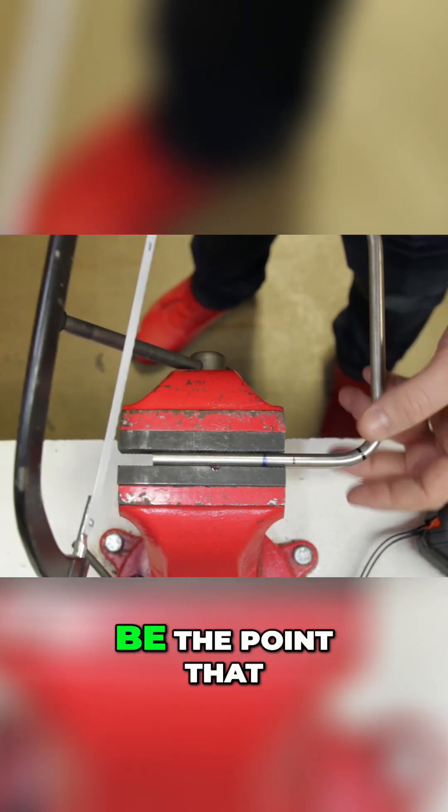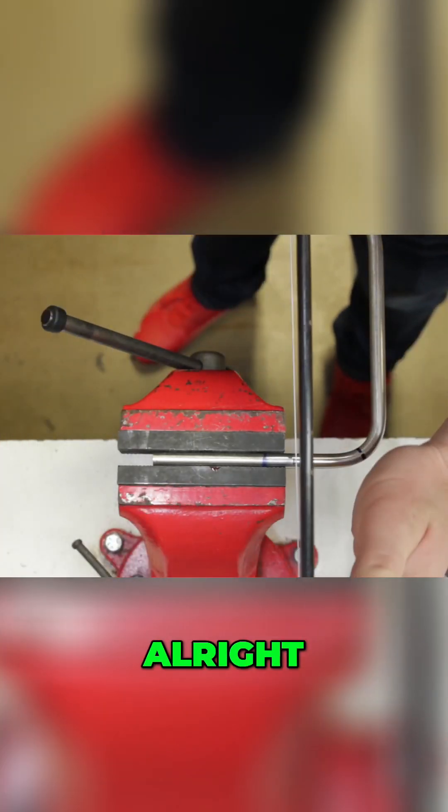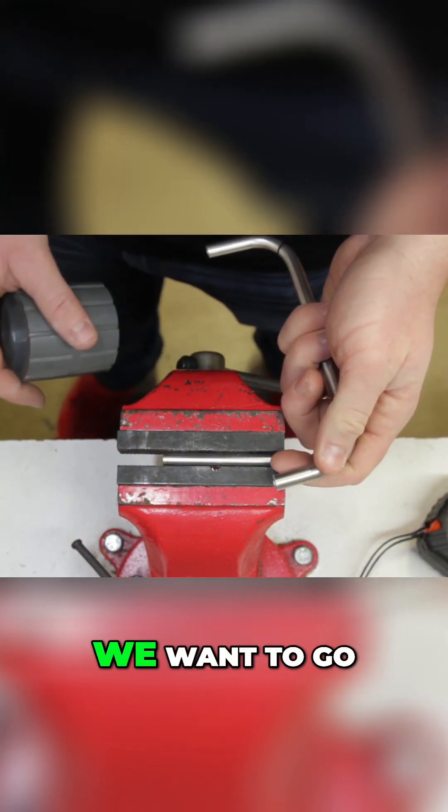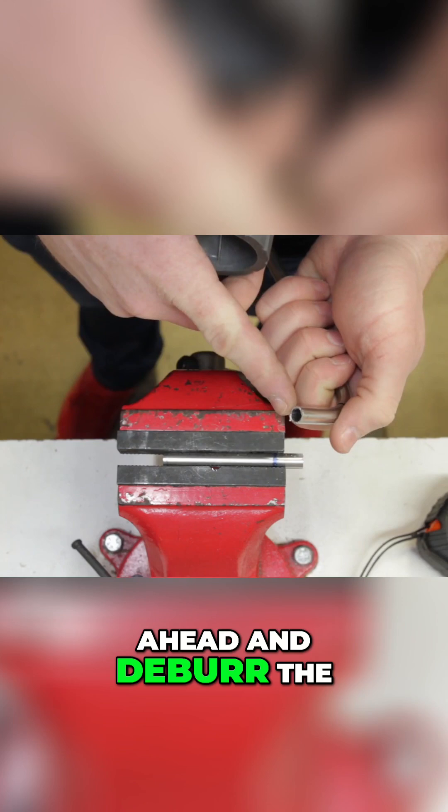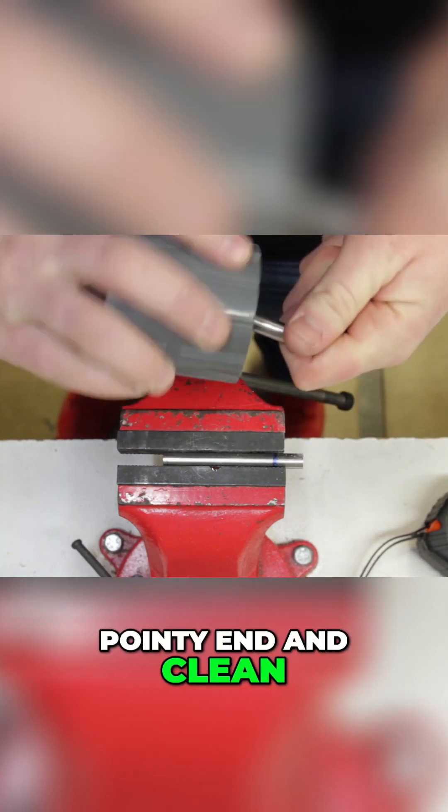So once we've got this cut, we want to go ahead and deburr the end of this tubing and clean the inside.